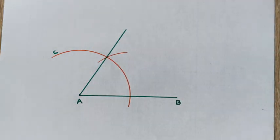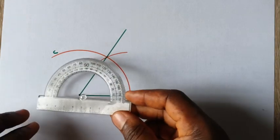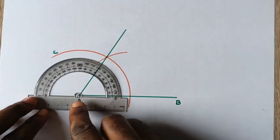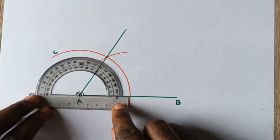With the help of a protractor, verify if this is exactly a 60 degree angle. Make sure that the center of the protractor is at the origin.